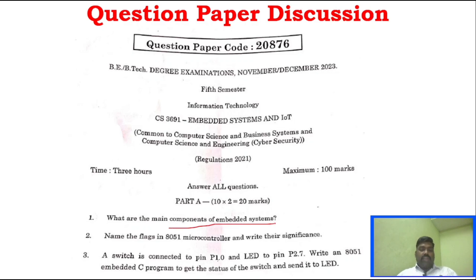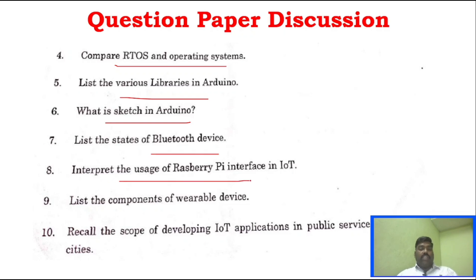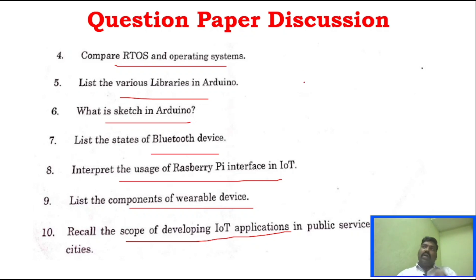For 2-mark questions: What are the main components of the embedded system? Name the flags of the 8051 controller. What is an embedded C program? Compare RTOS and operating system. Various libraries in Arduino. What is a sketch in Arduino? Bluetooth device and usage of Raspberry Pi interface in IoT. List the components of a wearable device and scope of developing IoT application in public services and smart cities. All these are direct 2-mark questions, and you will have 8 sure-shot 2-mark answers in this subject.